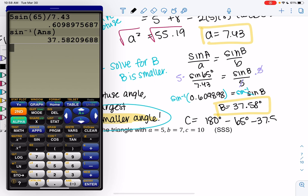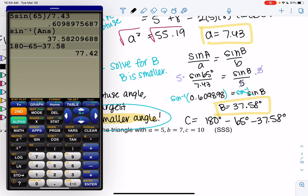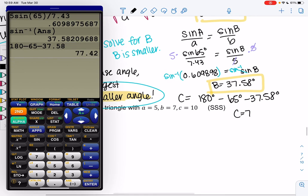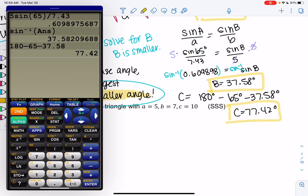So minus 65 minus 37.58. And we don't have to worry about acute or obtuse because the angles always add up to 180. So for the third angle, I will always do this. And I get 77.42.